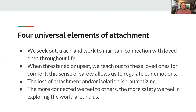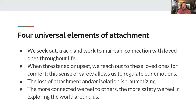What we know from attachment theory is this: there are four universal elements of attachment. The first one — we seek out, track, and work to maintain connection with loved ones throughout life. We seek it out, looking for that connection. We track it, watching and observing it in the ebb and flow of life. And we work to maintain it — once we have it and lock eyes on it, we're going to work to ensure that it's still there.